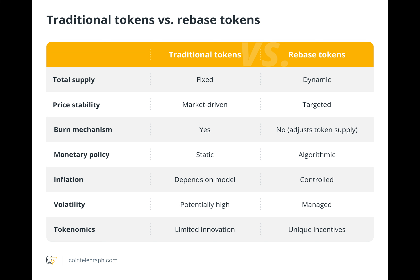Furthermore, price stability is not assured due to the automated nature of rebase procedures, and severe market conditions may cause notable departures from the intended target. Moreover, users unaware of the workings of rebase tokens may become confused about the process, which could result in a lack of adoption or confidence. Users and the projects issuing these tokens may also be exposed to legal concerns due to legislative uncertainties surrounding rebase tokens and compliance with current laws and regulations.